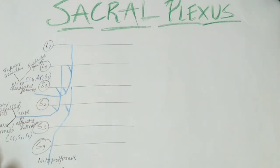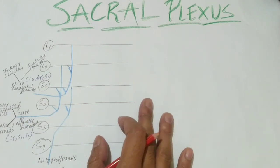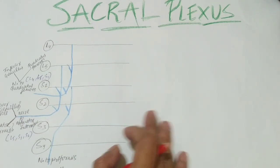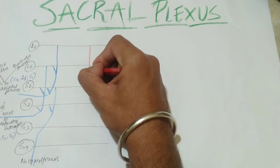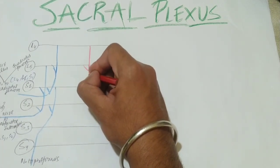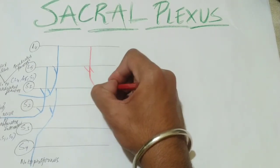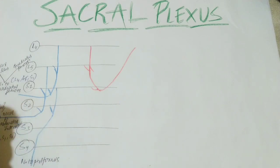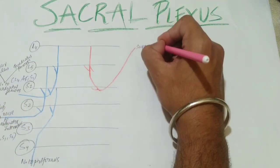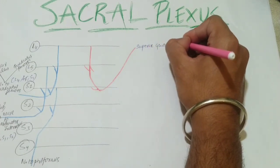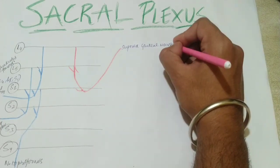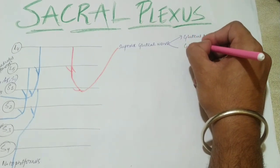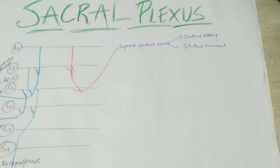Now we'll see the anterior divisions. First is the superior gluteal nerve, arising from L4, L5, and S1. This is a motor nerve with no sensory supply. It supplies two muscles: gluteus medius and gluteus minimus of the gluteal region.